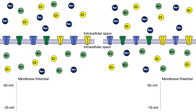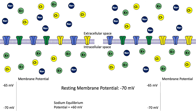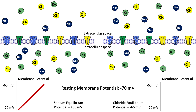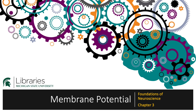It is possible to predict which way an ion will move by comparing the ion's equilibrium potential to the neuron's membrane potential. Let's assume we have a cell with a resting membrane potential of negative 70 millivolts. Sodium's equilibrium potential is positive 60 millivolts; therefore, to reach equilibrium, sodium will need to enter the cell, bringing in positive charge. On the other hand, chloride's equilibrium potential is negative 65 millivolts. Since chloride is a negative ion, it will need to leave the cell in order to make the cell's membrane potential more positive, to move from negative 70 millivolts to negative 65 millivolts.